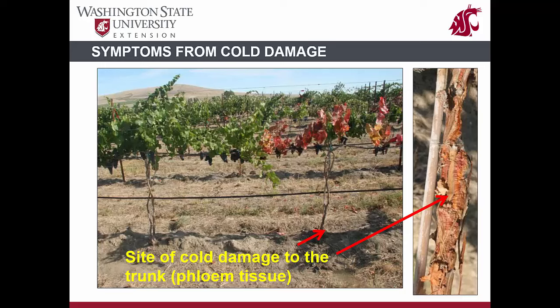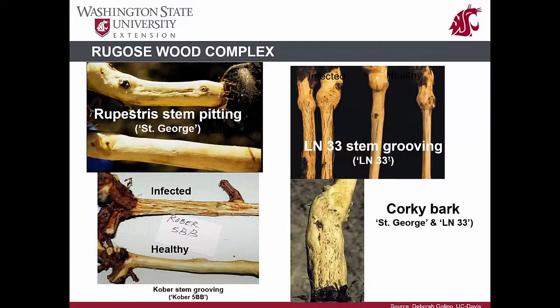The symptoms of rugose wood complex are expressed as pits and grooves in the woody trunk of a vine. The symptoms can be seen on both the scion and rootstock around the graft union. Symptoms of rugose wood complex are usually not expressed in self-rooted Vitis vinifera cultivars, like those planted in eastern Washington, even though the viruses causing disease are present. All four disorders of rugose wood disease complex can be recognized by grafting them on specific indicator hosts — each disorder will only appear when grafted on the appropriate host, such as St. George, LN33, or Kober 5BB.